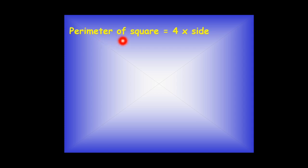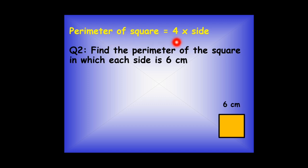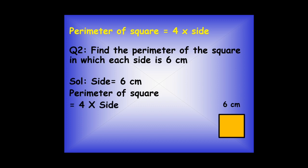Now let's talk about a square. The perimeter of a square is 4 multiplied by its side. Here we have a square on the screen where each side is 6 cm. We note that side equals 6 cm. Using the formula, perimeter equals 4 multiplied by side, we put in the value 6 cm. The product of 4 and 6 is 24, so the perimeter of this square is 24 centimeters.